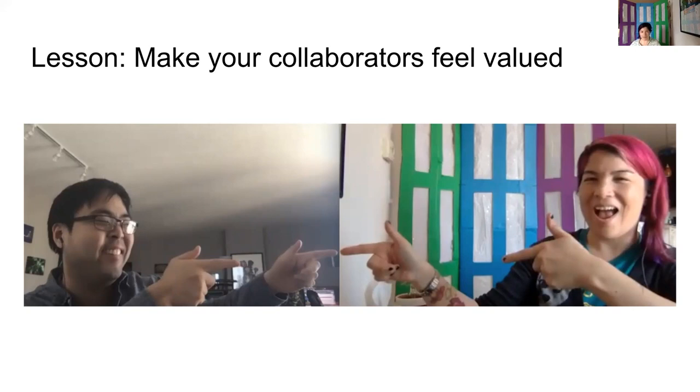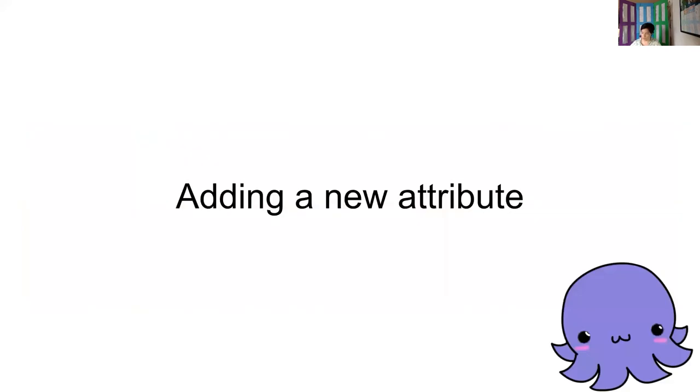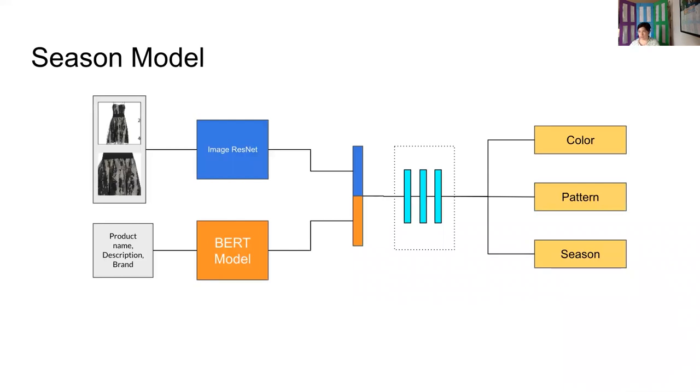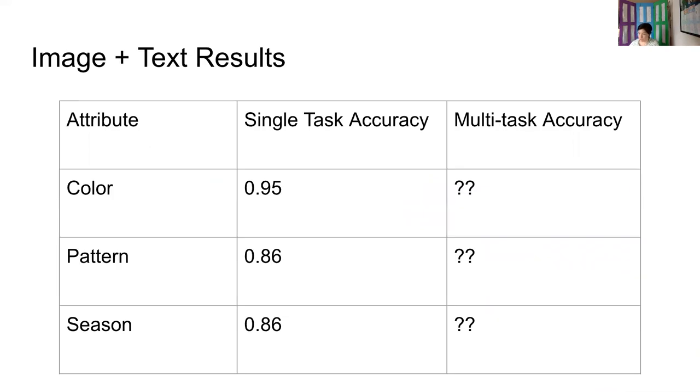So once we resolved some of our conflict, we had this library that was in a good place where we could add new tasks onto our model. So we decided it was time to add a new attribute. And the initial attribute we wanted to add was season. So we were going to take basically our same model architecture that already had color and pattern and add season on. And just like I had done previously, the first step was for me to train a single task season image and text model just so we could get a baseline of what we were working with. So I trained that model and our season accuracy was about 86%. So I was feeling great. I know exactly how to train a multitask model. No problem.